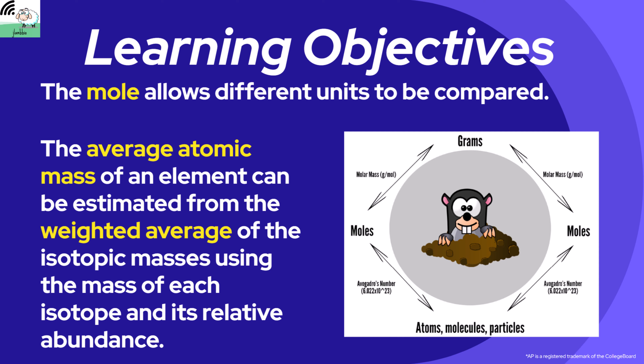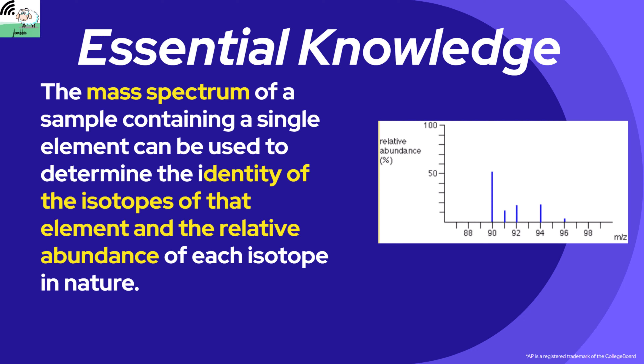The last thing we're going to take a look at today, which is probably new to you, is what is known as a mass spectrum or mass spectroscopy. It can be used to determine the identity of isotopes of an element and the relative abundances of each isotope in nature. If we take a look at the graph, the masses of isotopes are on the x-axis and the relative abundance is on the y-axis. We can actually utilize this information to go through and calculate average atomic masses.